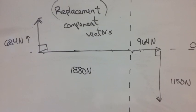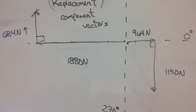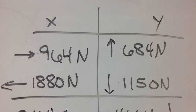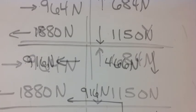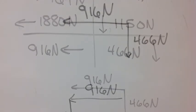The vector components replace the original vectors. And we use those replacement vector components to add the vectors together by putting the x's together and the y's together as you see in the chart. Add the x column and the y column and show the net force components.